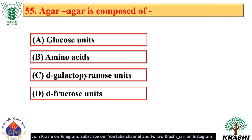Question number 55. Agar-agar is composed of D-galactopyranose units — option C.